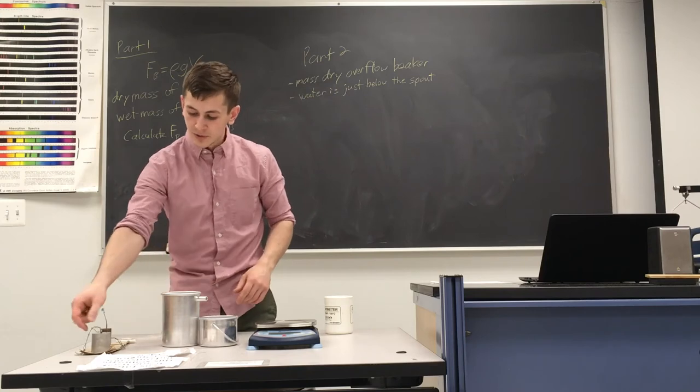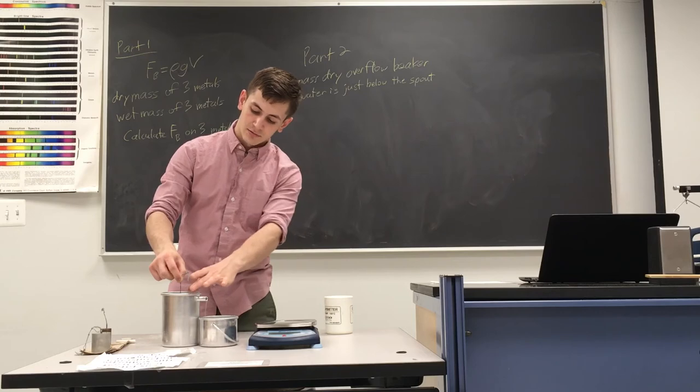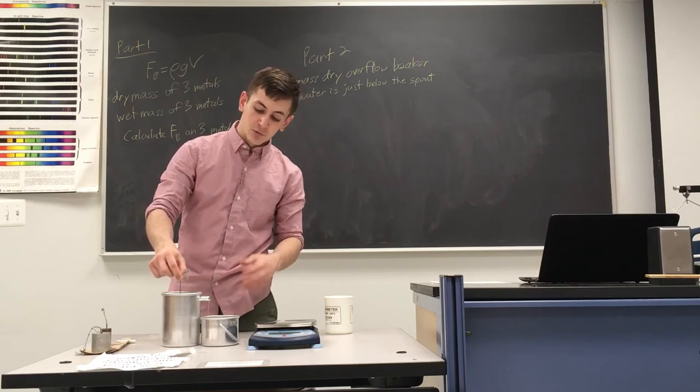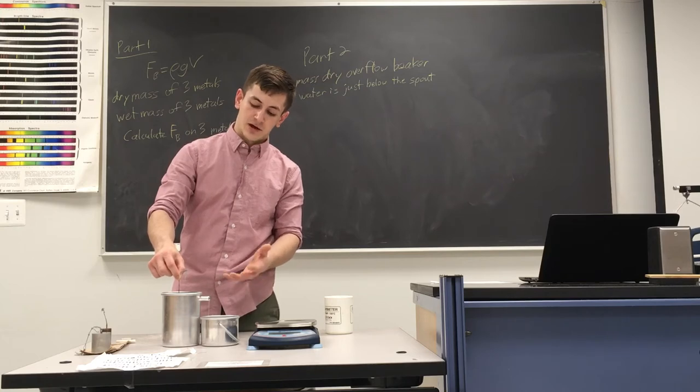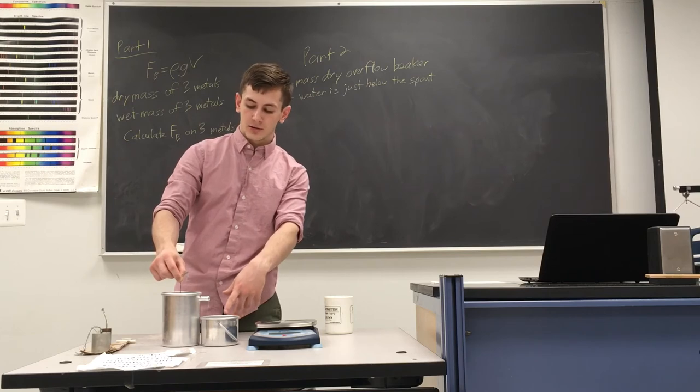So once we do that, you want to submerge the metal just below the water line. And as you can see, the water just slowly drips out. And you want to wait for the water to stop dripping, so that way you know the total mass of the water has moved from the big beaker to the overflow bucket.